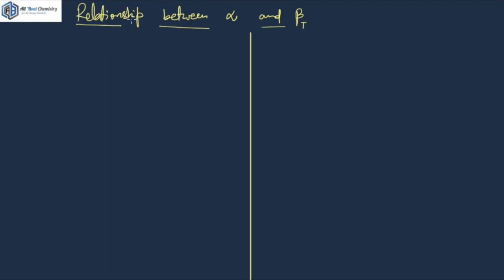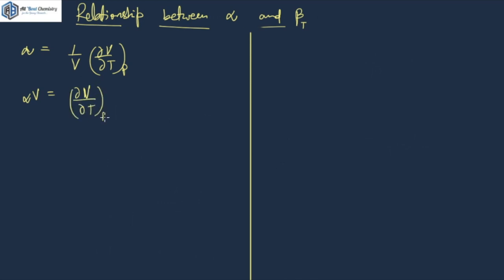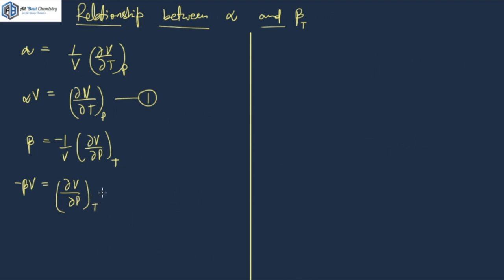I divided the screen into two so that I can have some space to explain. Let's start from the beginning. We are aware of the formula for alpha: alpha equals 1 by V and del V by del T at constant P. So alpha V equals del V by del T at constant P — let that be equation number one. Again, beta T equals minus 1 upon V and del V by del P at constant T. Multiplying both sides by minus V, minus beta V equals del V by del P at constant T — let that be equation number two.